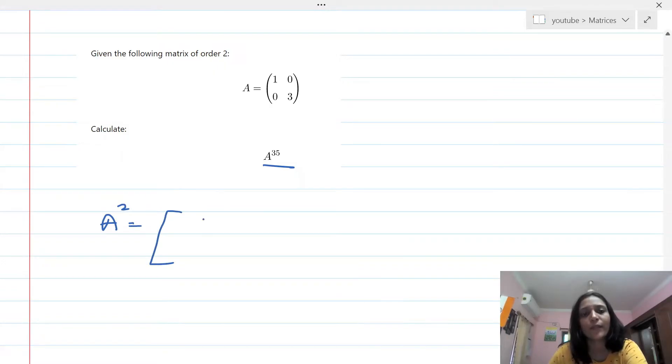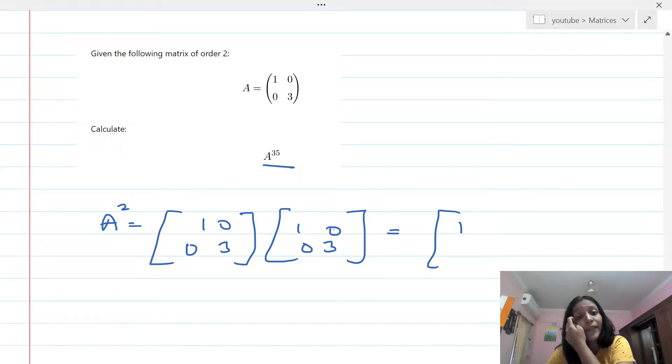The first thing I'm going to do is find A squared, which is [1 0; 0 3] times [1 0; 0 3]. This equals [1 into 1 is 1, 0 into 0 is 0; 1 into 0 is 0, 0 into 3 is 0] in the first row, then [0 into 1 is 0, 3 into 0 is 0; 0 into 0 is 0, 3 into 3 is 9].